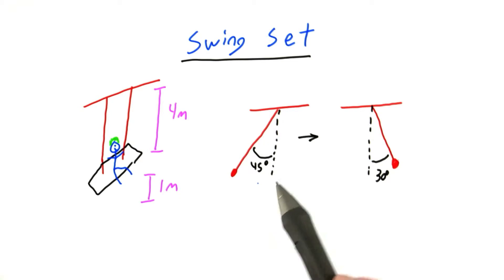So for this problem, imagine that the maximum angle you ever reach away from the vertical here is 45 degrees. So when you swing back all the way and you run out of velocity, you're at 45 degrees away from the vertical line here. One time when you're swinging forward,